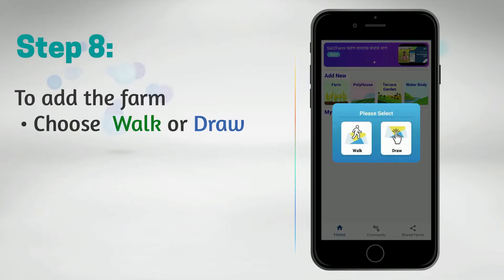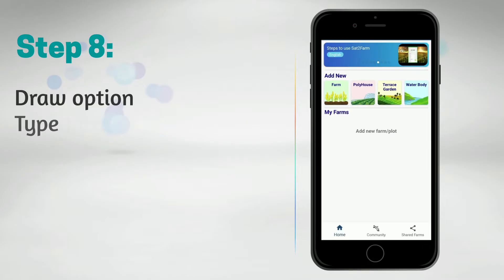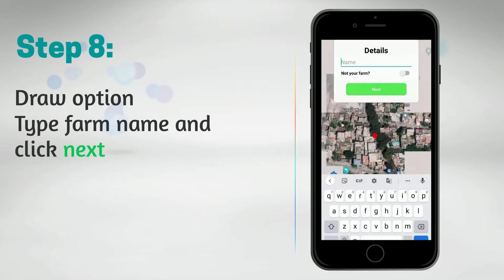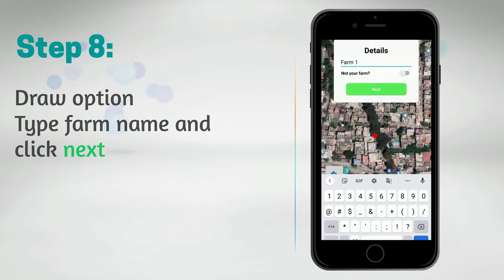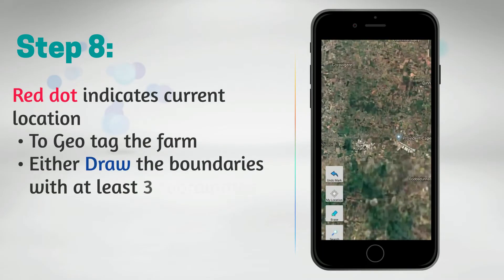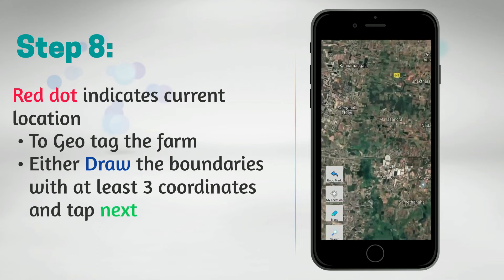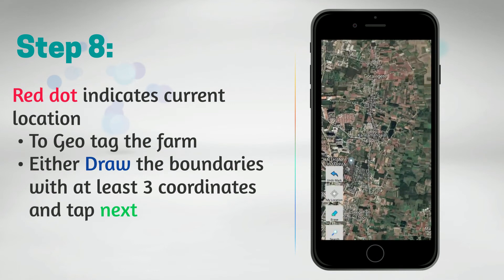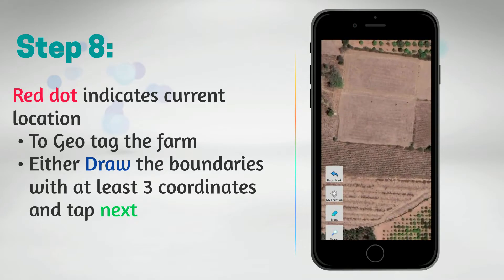Step 8: There are two ways of adding your farm — either by Walk or Draw. If you choose the Draw option, enter the farm name and tap the next button. The red dot on the map shows your present location. Locate your farm and geotag it by pinning or marking the boundaries with at least three coordinate points to get the polygon of your farm.